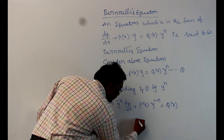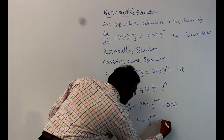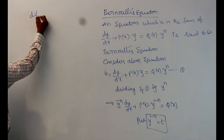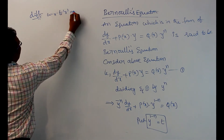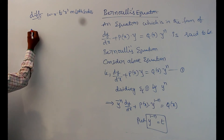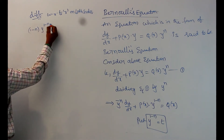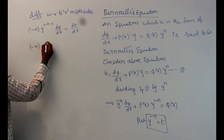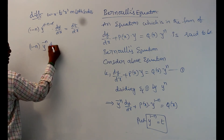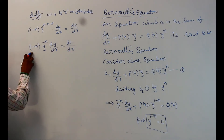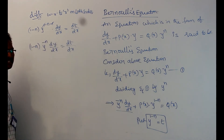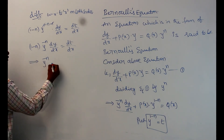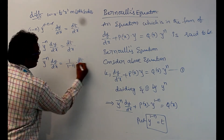Without loss of generality, put y^(1−n) = t. Differentiating with respect to x on both sides: (1−n)·y^(−n)·(dy/dx) = dt/dx. We need y^(−n)·(dy/dx), so multiplying both sides by 1/(1−n) gives y^(−n)·(dy/dx) = (1/(1−n))·(dt/dx).